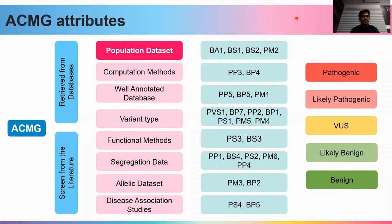ACMG classifies variants based on datasets and methodologies — population datasets, computational methods, and others — into five categories. In the following slides, we will go through each dataset and provide an overview of how to interpret variants. The detailed ACMG attributes will be covered in separate lectures.